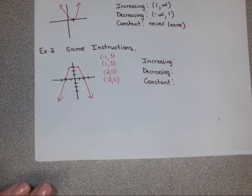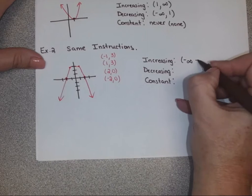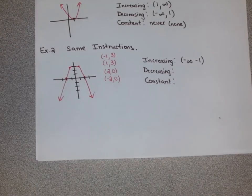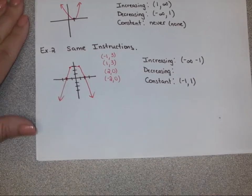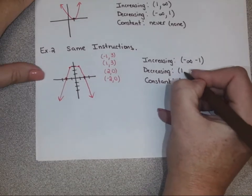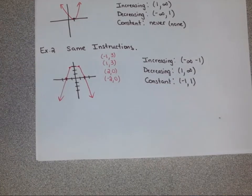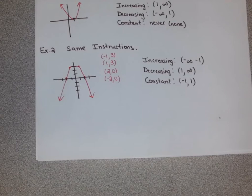It is increasing first — increasing from negative infinity, because we're talking about x values, and the x value keeps going back to the left forever. Where do we stop the increase? At x equals negative one. Then we stay constant from negative one until x equals one. Then from one onward we're decreasing. We go to positive infinity, not negative, because we're going forever to the right — we only care about left to right for increasing, decreasing, and constant.